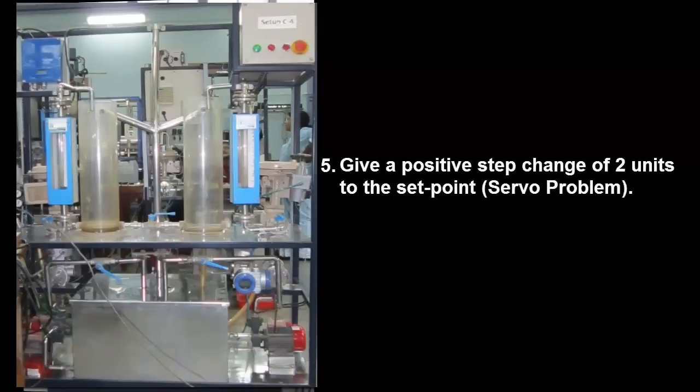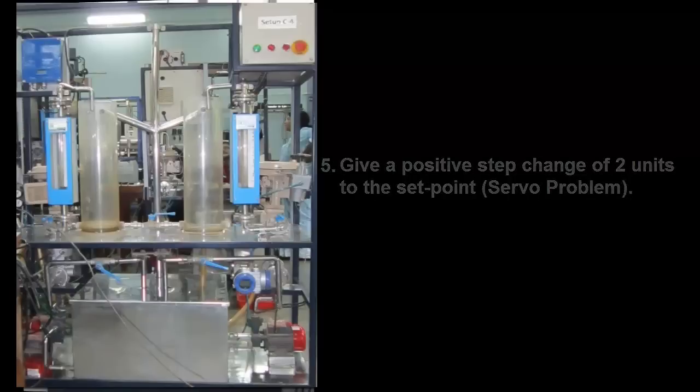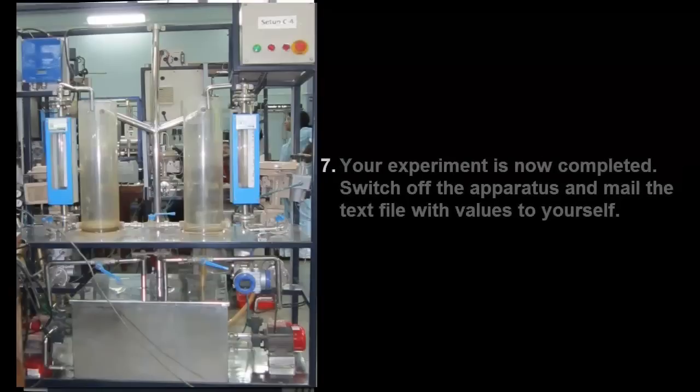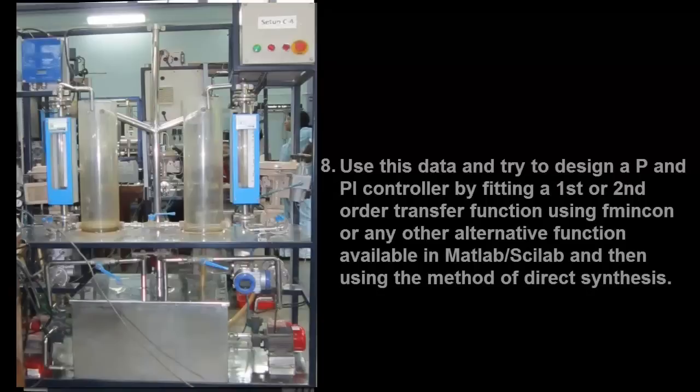The next step in the experiment is to give a positive step change of two units to the set point, which is a servo problem. After the steady state is reached, now give a negative step change of two units to the set point. Your experiment is now completed. Switch off the apparatus and mail the text file with the values to yourself.